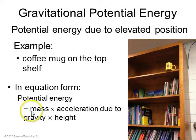And there's even an equation for it. It's the mass of the object times g, the acceleration due to gravity, times the height that it is off the ground, mgh, where g is 9.8.